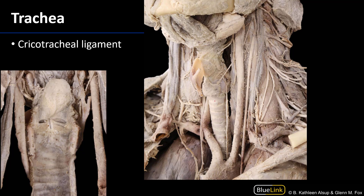We can see the trachea beginning here and running behind some of the branches of the arch of the aorta. We can see the brachiocephalic trunk as well as the left common carotid artery. We can see the left recurrent laryngeal nerve ascending here, and the trachea is suspended from the larynx — specifically the cricoid cartilage — by this cricotracheal ligament.